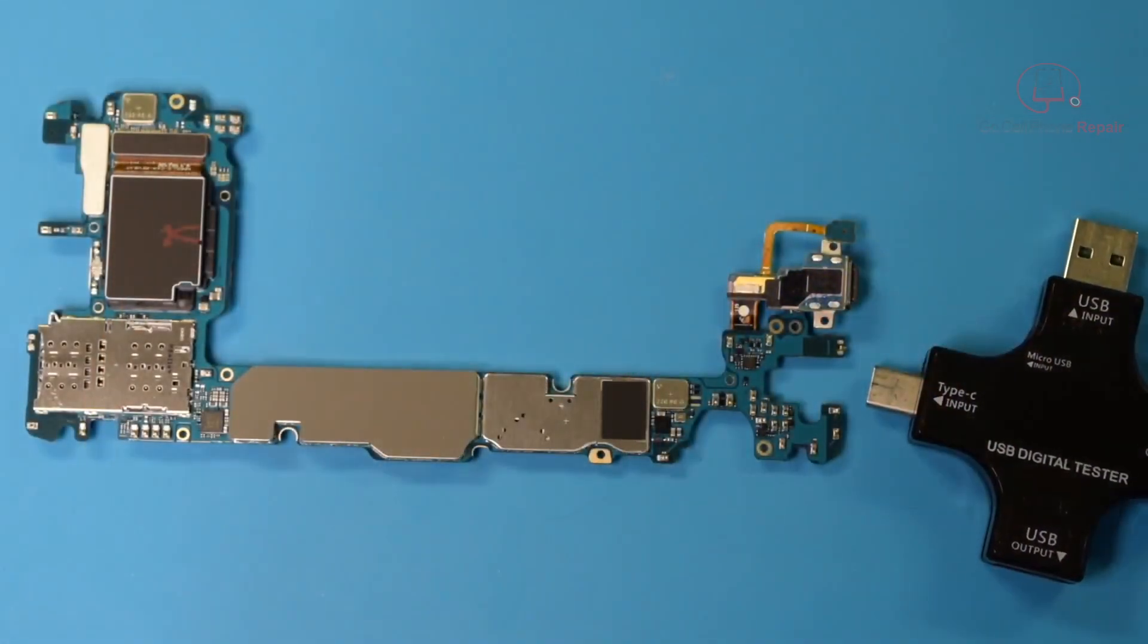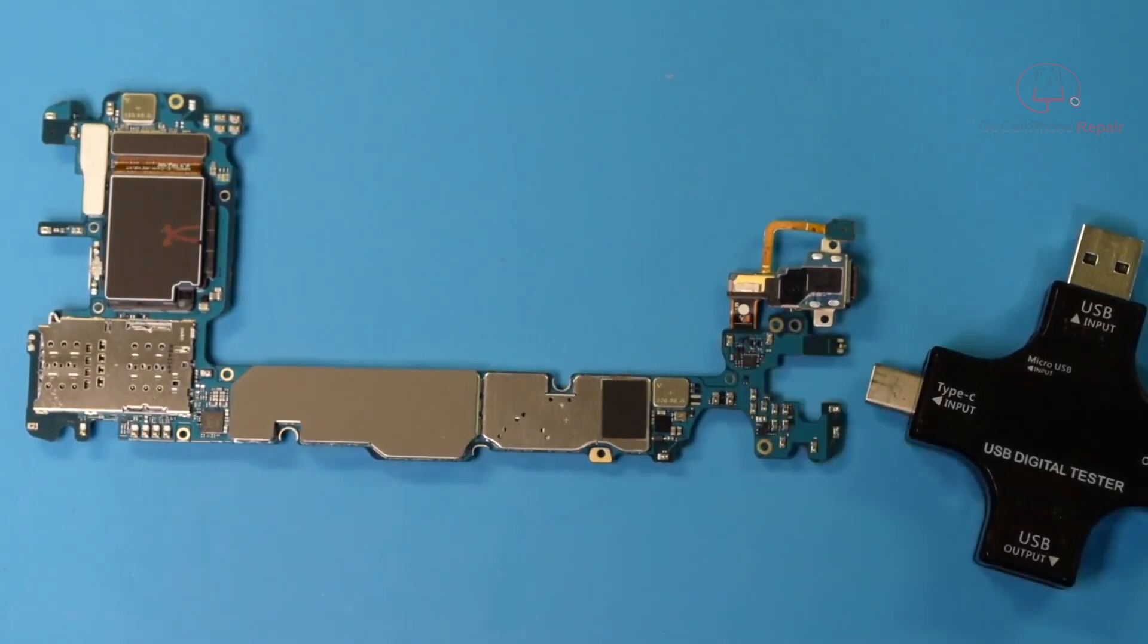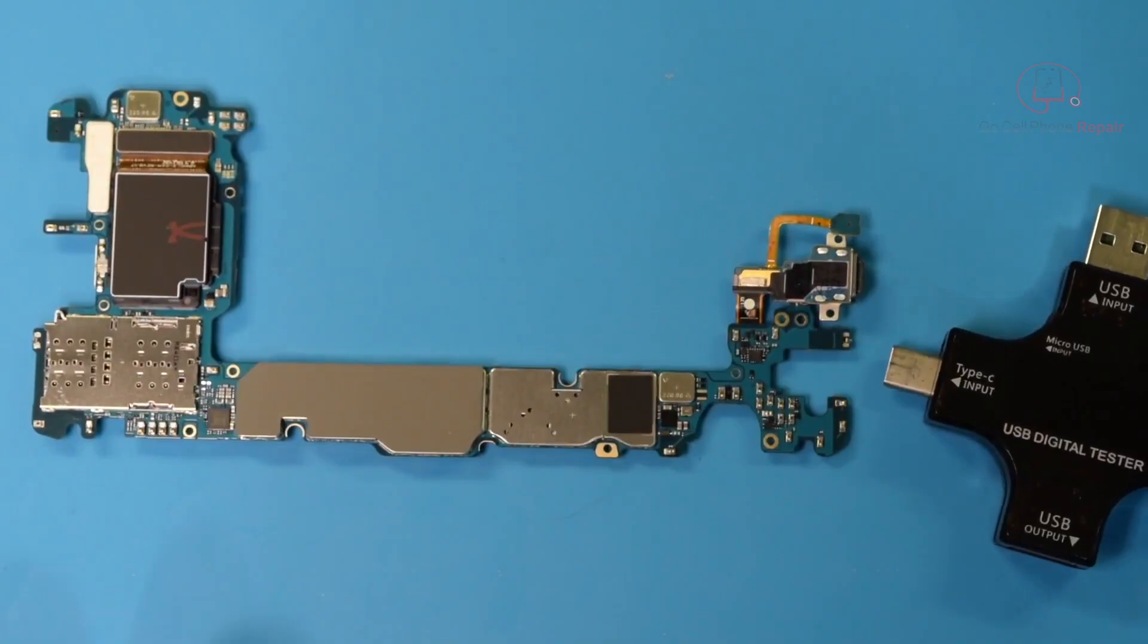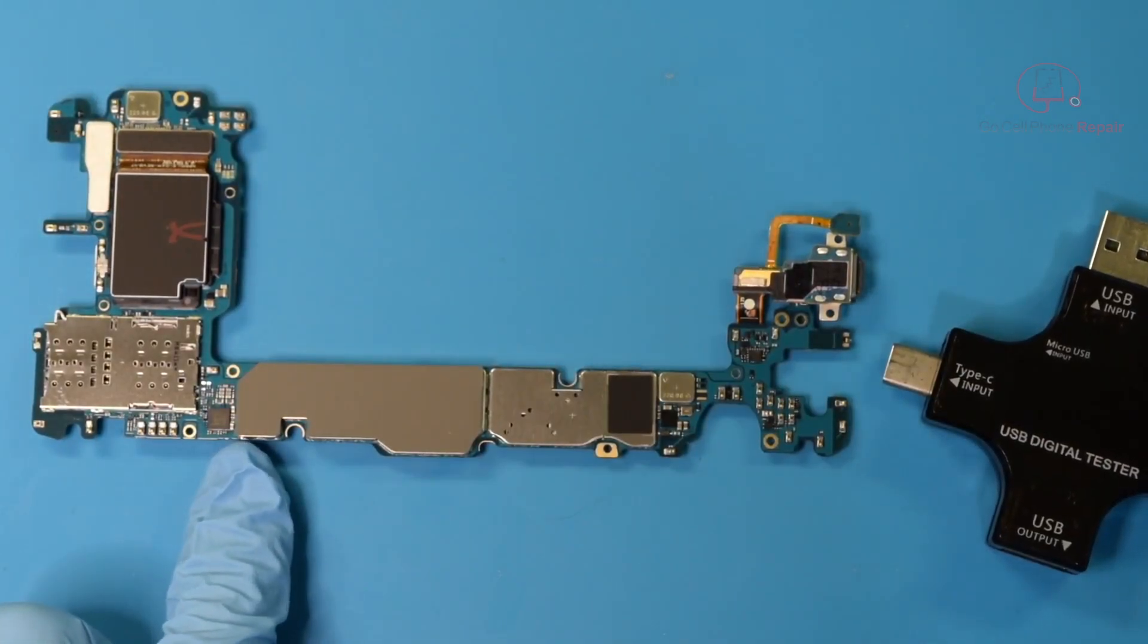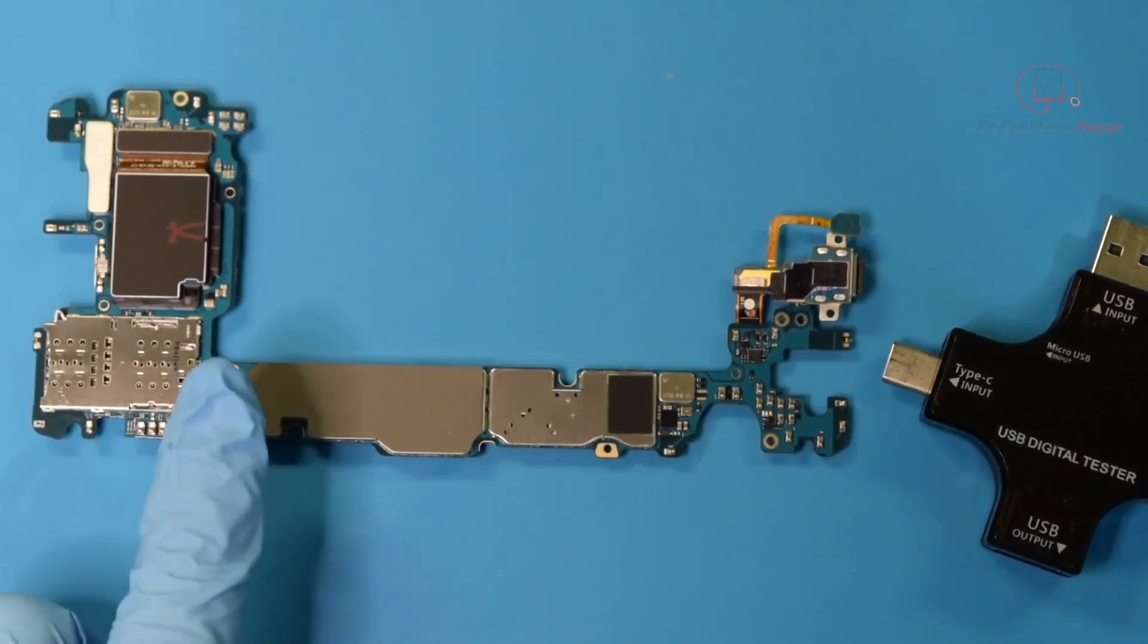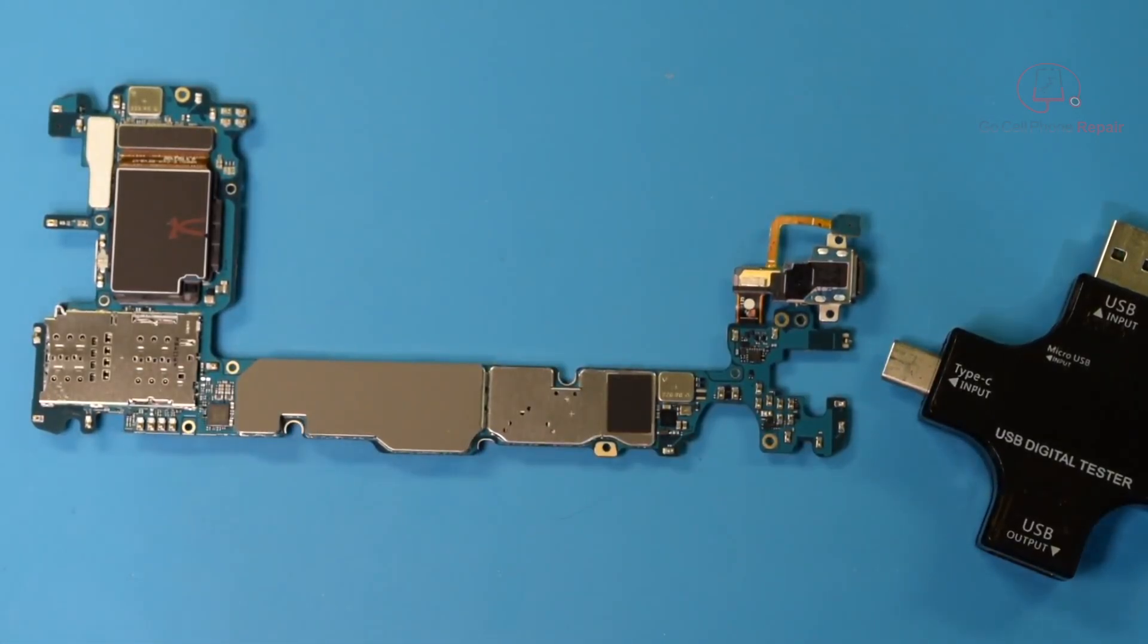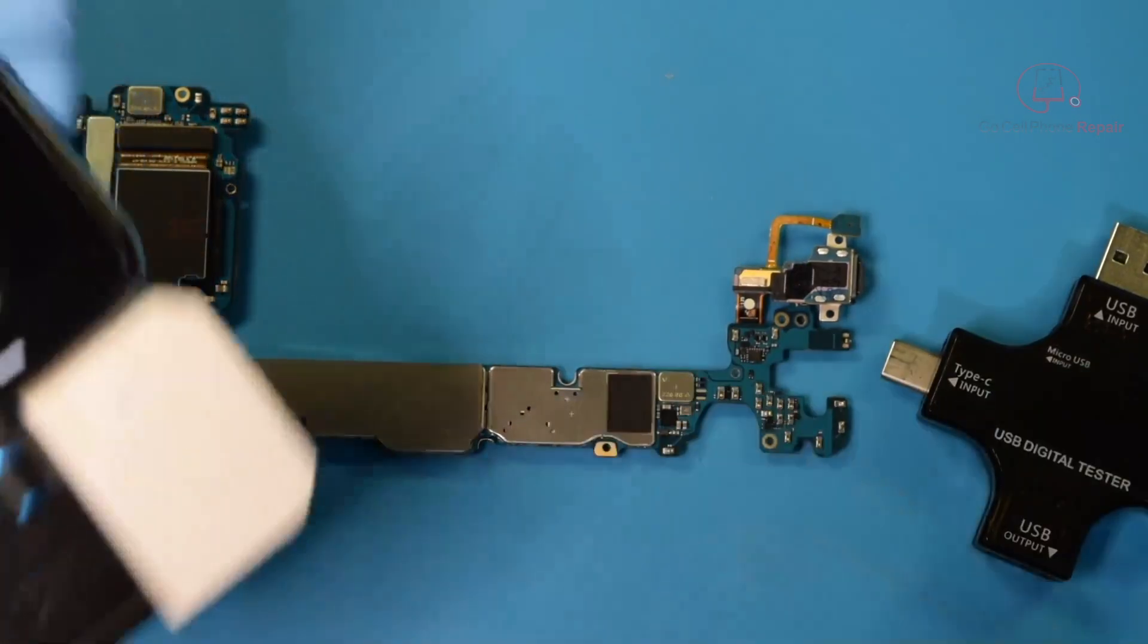We've already ruled out the charge port - we tried a new one and that didn't do any good. I am now looking at the back side of the board. We're going to see if we can find where the heat is coming from. We've got this little cover here, and there's a charging IC underneath this tape, so I don't expect to be able to see very much right now.